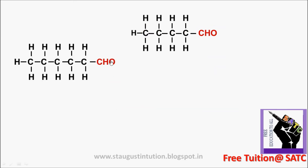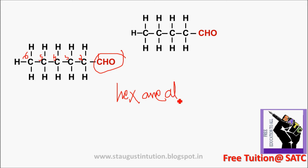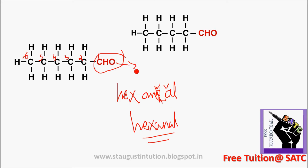Next compound: CHO is carbon 1, then 2, 3, 4, 5, 6 - six carbons, so the word root is HEX. Single bond gives ANE. Adding suffix AL gives HEXANAL. This is the aldehyde naming system.